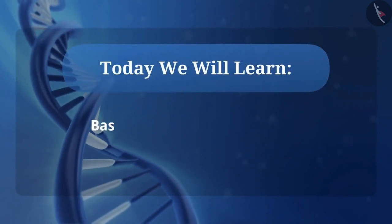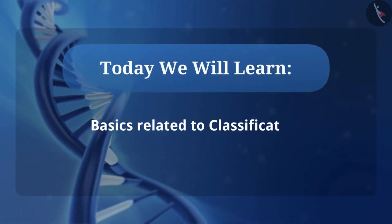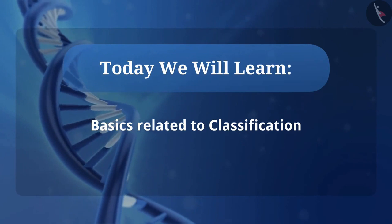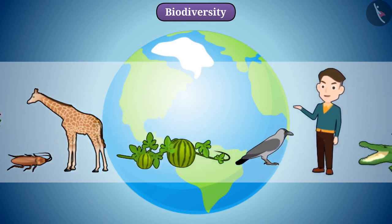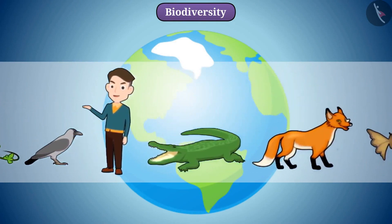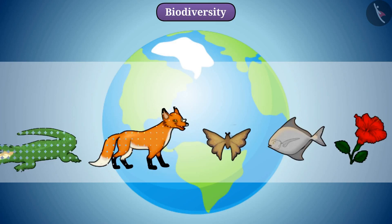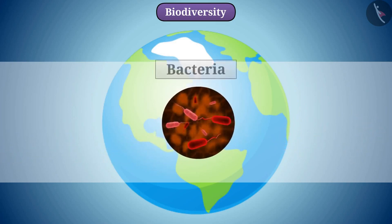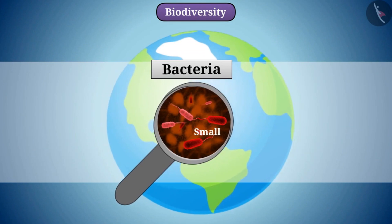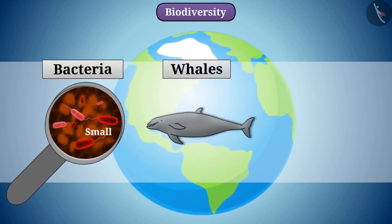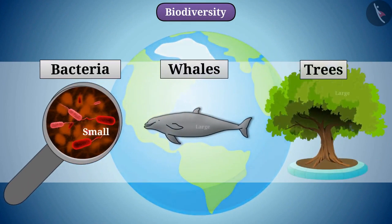Today we will learn some basics related to classification. Many organisms are found on earth, and all are different from each other in some form or the other. Some organisms such as bacteria are so small that it is necessary to use a microscope to see them, while some organisms such as whales and trees are very large.